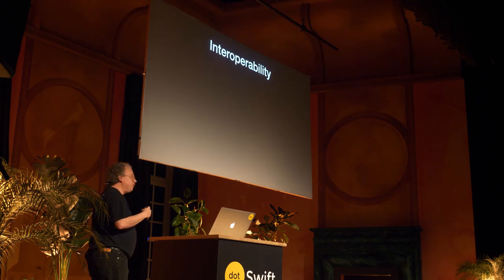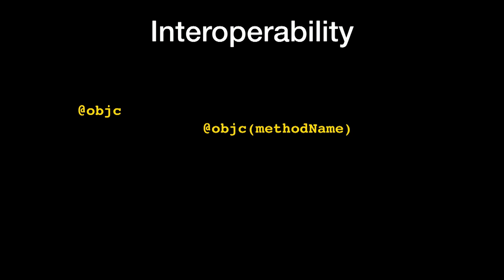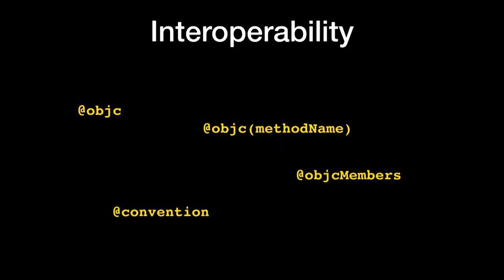Then there's interoperability — talking to the C and Objective-C sides of the world. No C++, sorry. @objc: use Objective-C calling conventions for this function, and this implies @dynamic. As Dan Jalkut mentioned, you can put in a selector name and Swift will use that selector when calling this particular method. @objcMembers: if you want to do a blanket tagging so everything in this class is tagged with @objc. And then convention — calling convention — which controls how the compiler arranges bytes in registers and on the stack for calling functions: C, closure, thin, thick, all sorts of stuff.